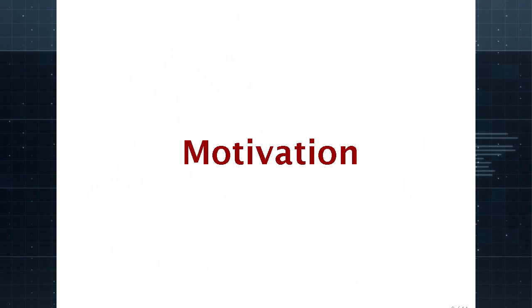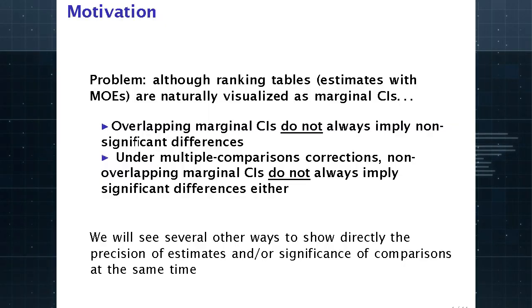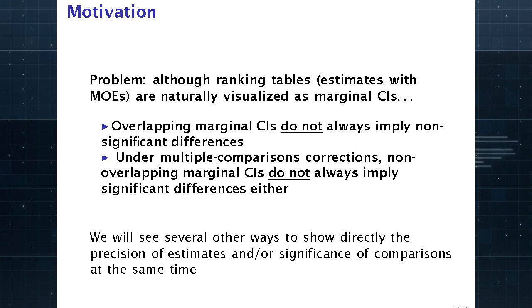The motivating problem is that the Census Bureau puts out ranking tables from the ACS and other data products, where for each state in the United States we have the estimated mean travel time to work and its margin of error. It's natural to rank them in order, see which state has the highest and lowest travel times to work on average, and use the margins of error to compute confidence intervals — for instance, 90% confidence intervals for each state's estimate.